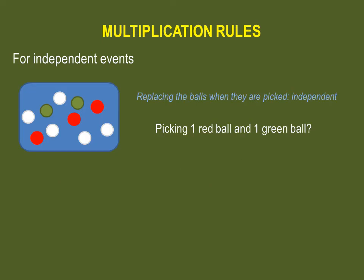Let's do an example of a multiplication rule for independent events. Imagine you have a box with five white balls, two green balls, and three red balls. You are asked to pick a ball, note its color, and then put the ball back into the box. By replacing the ball into the box after it has been picked, you are ensuring that event B will be independent from the first one, because you have exactly the same number of balls as when you picked your first one.